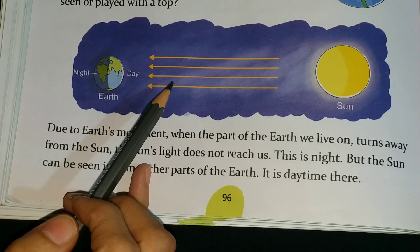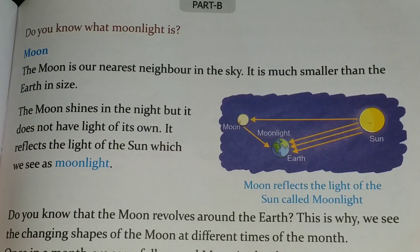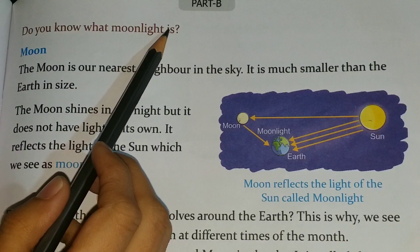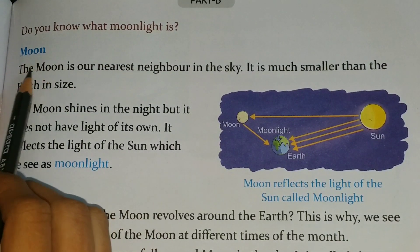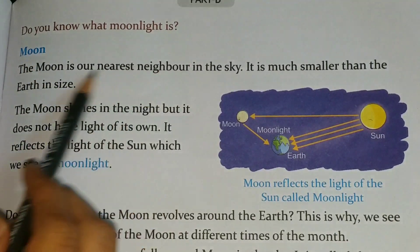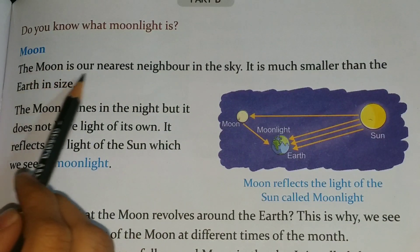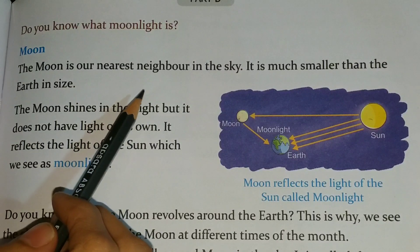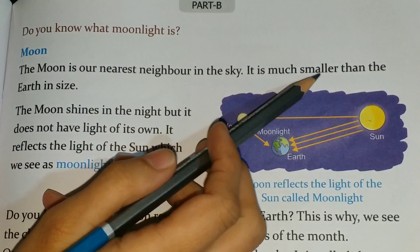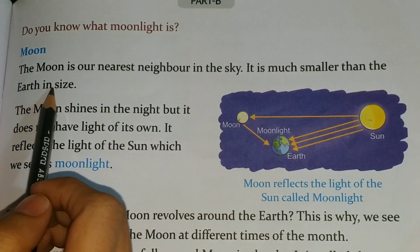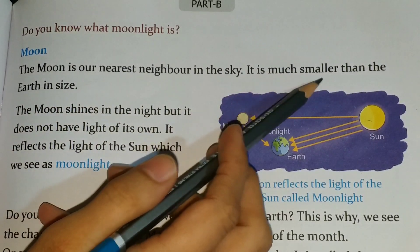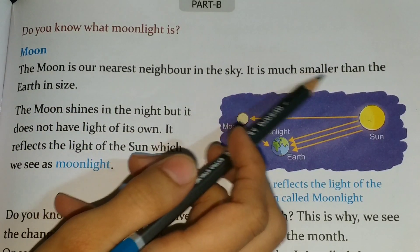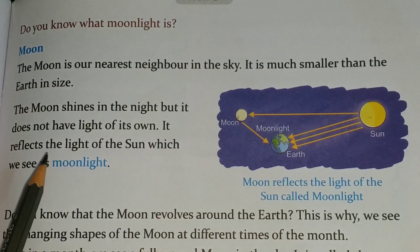Now let's continue further. Do you know what moonlight is? The moon is our nearest neighbor in the sky. It is much smaller than the Earth in size.